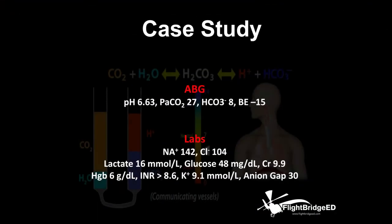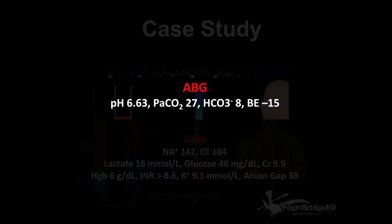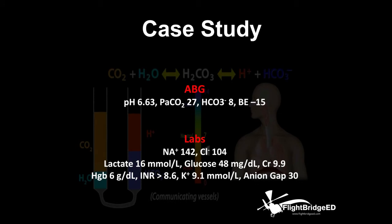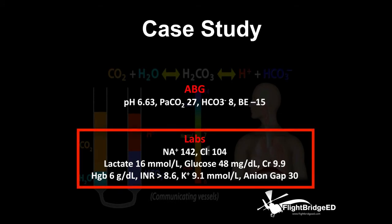They arrive at the hospital. Once the ED team starts working this patient up, they get an ABG. The ABG is significant: pH of 6.63, PaCO2 of 27, bicarb of 8, and a base excess of negative 15. His labs are very ominous — sodium 142, chloride 104, lactate at 16, glucose of 48, creatinine significantly elevated at 9.9, hemoglobin of 6 g/dL, INR greater than 8.6, K of 9.1, and a current anion gap of 30.